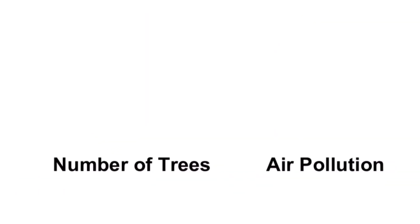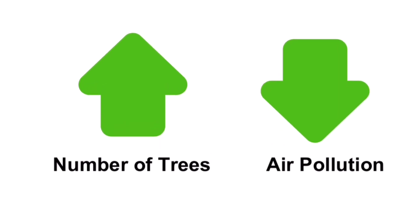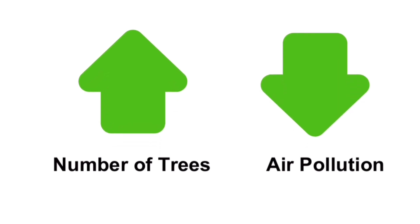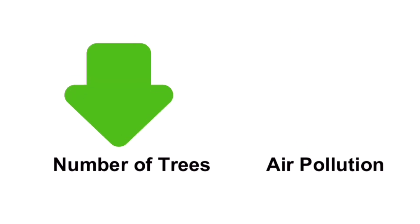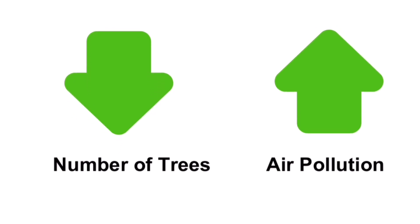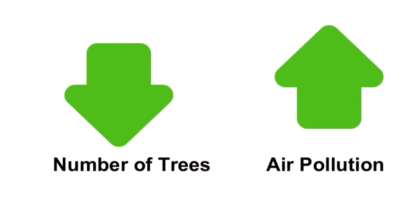Another example: the number of trees and air pollution in a given area are inversely proportional to each other. If the area has more trees, it has less pollution. On the other hand, if that same area has fewer trees, there is a greater probability of air pollution. These two variables are inversely proportional to each other.